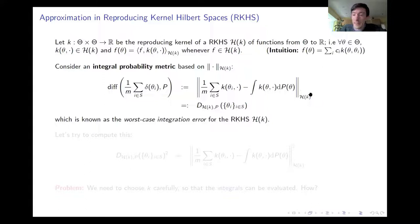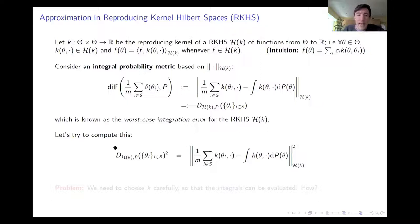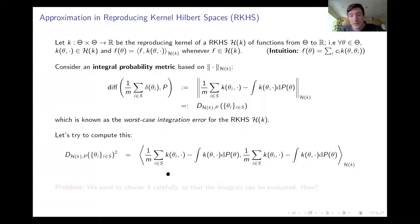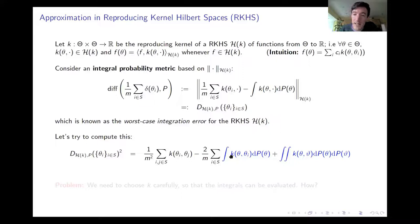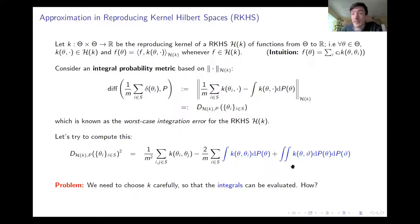We can go further. Squaring this worst-case error, expanding it, exploiting linearity of the inner product and the reproducing property, we arrive at the well-known expression for the squared worst-case error in the reproducing kernel Hilbert space. This involves evaluating the kernel at pairs of states theta_i and theta_j in our representative subset, and evaluating integrals of the kernel over one or both arguments with respect to the posterior P. The challenge — which you've probably noticed — is that everything is circular: we can't evaluate those integrals because they require integration with respect to the posterior P, and if we had P, we wouldn't need any of this.